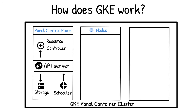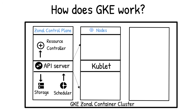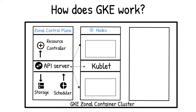The control plane is responsible for deciding what runs on all the cluster's nodes. This can include scheduling workloads, managing networks, storage, life cycle, scaling, and upgrades. A node runs the services necessary to support the containers that make up your cluster's workloads. These include the container runtime and the Kubernetes node agent, Kubelet, which communicates with the control plane and is responsible for starting and running containers scheduled on that node.